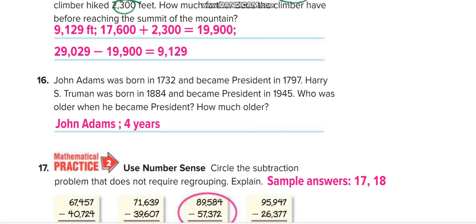In question number 16, they are asking about age. John Adams was born in 1732 and became president in 1797. Harry S. Truman was born in 1884 and became president in 1945. Who was older when he became president? So first we will solve John Adams.